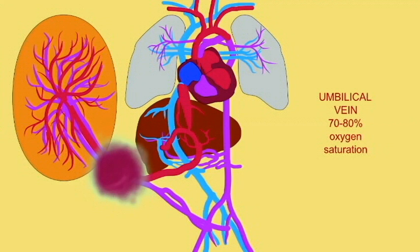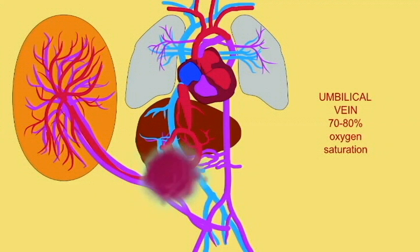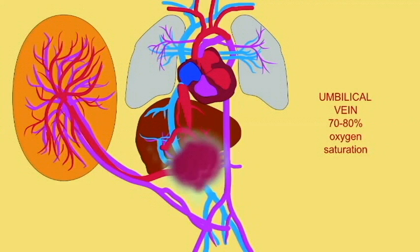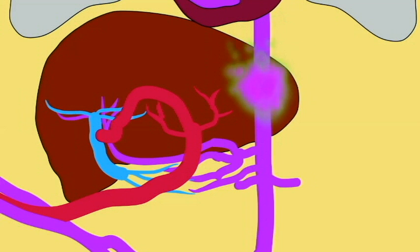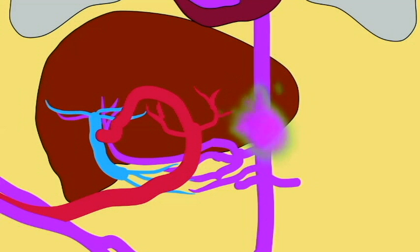This umbilical vein passes through the navel and reaches the liver. The fetal liver is not active in processing the nutrients from diet because everything is pre-digested by the mother's digestive system. So the only blood required by the fetal liver is that needed for its own development, not to support digestive processes.